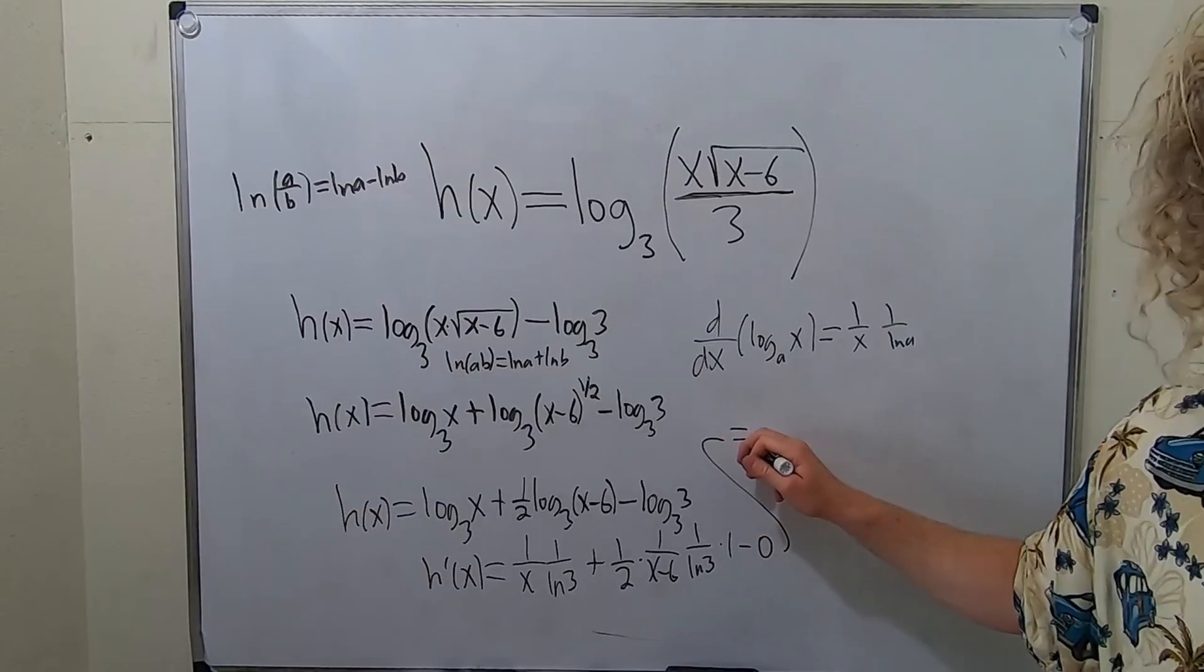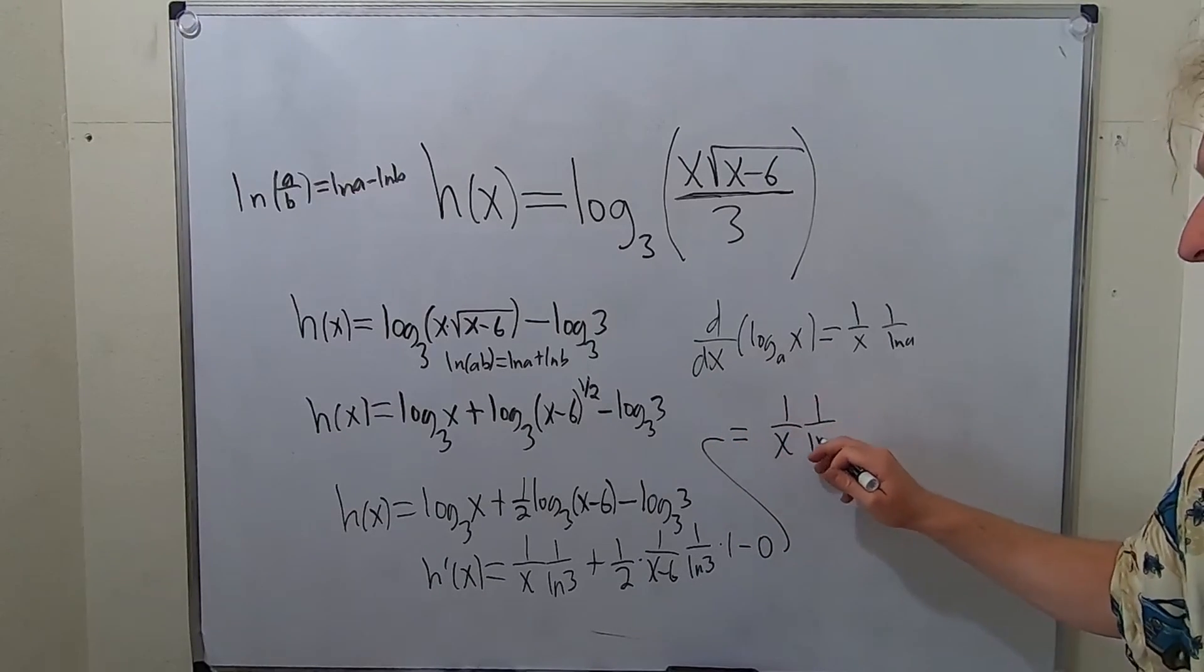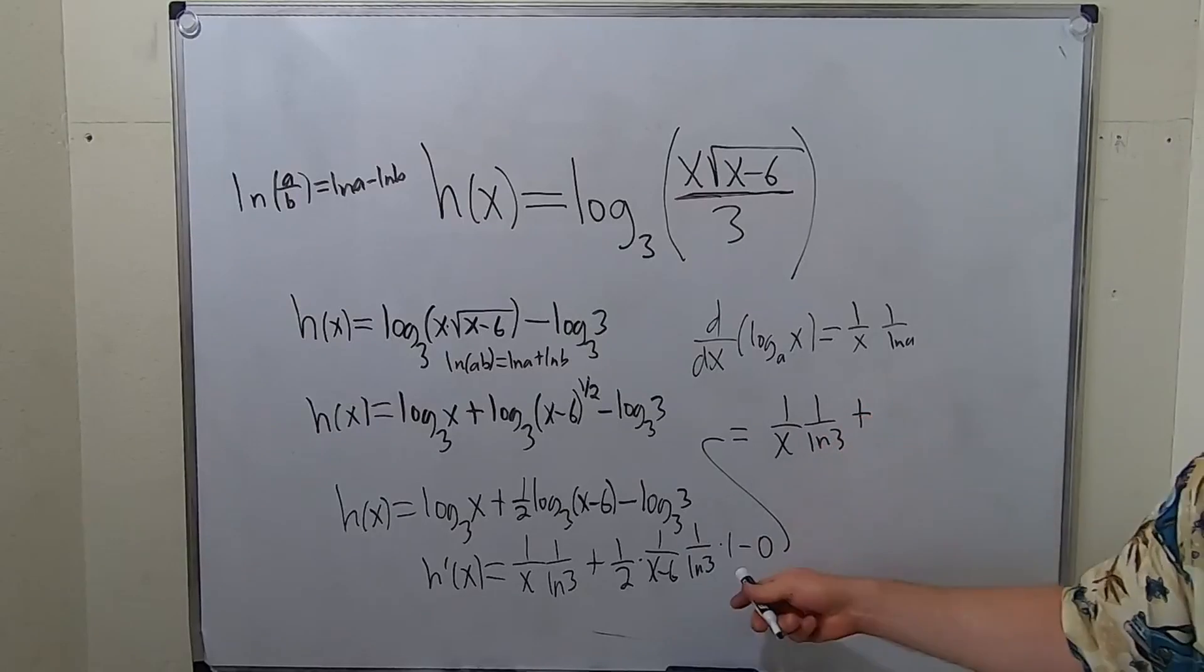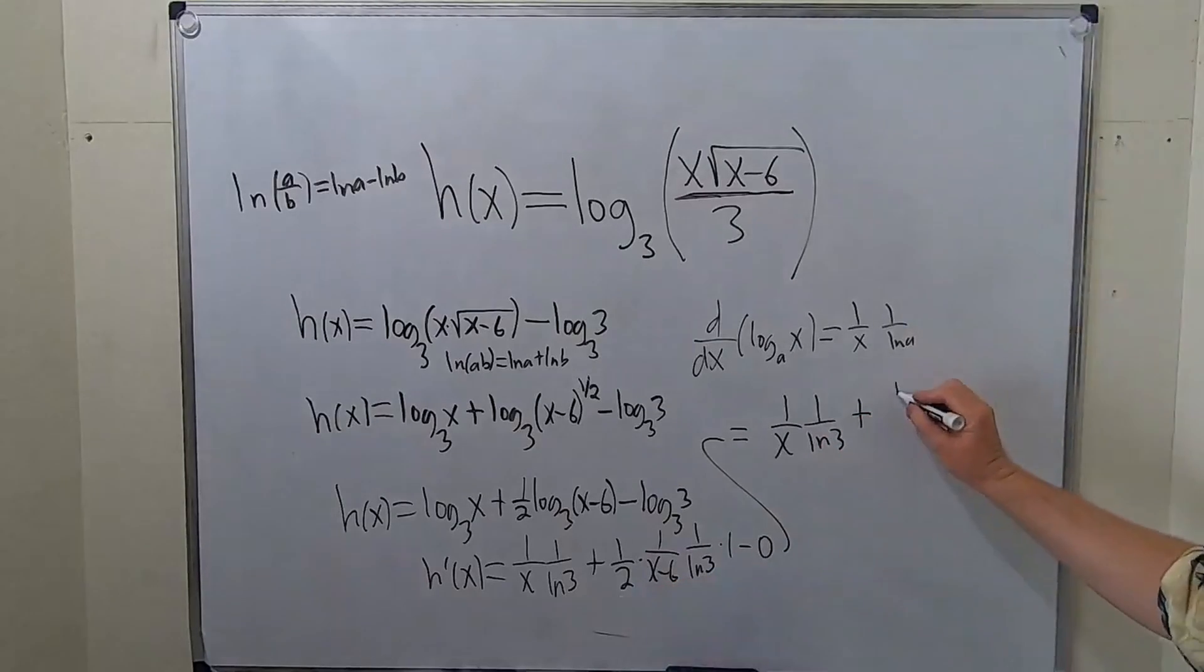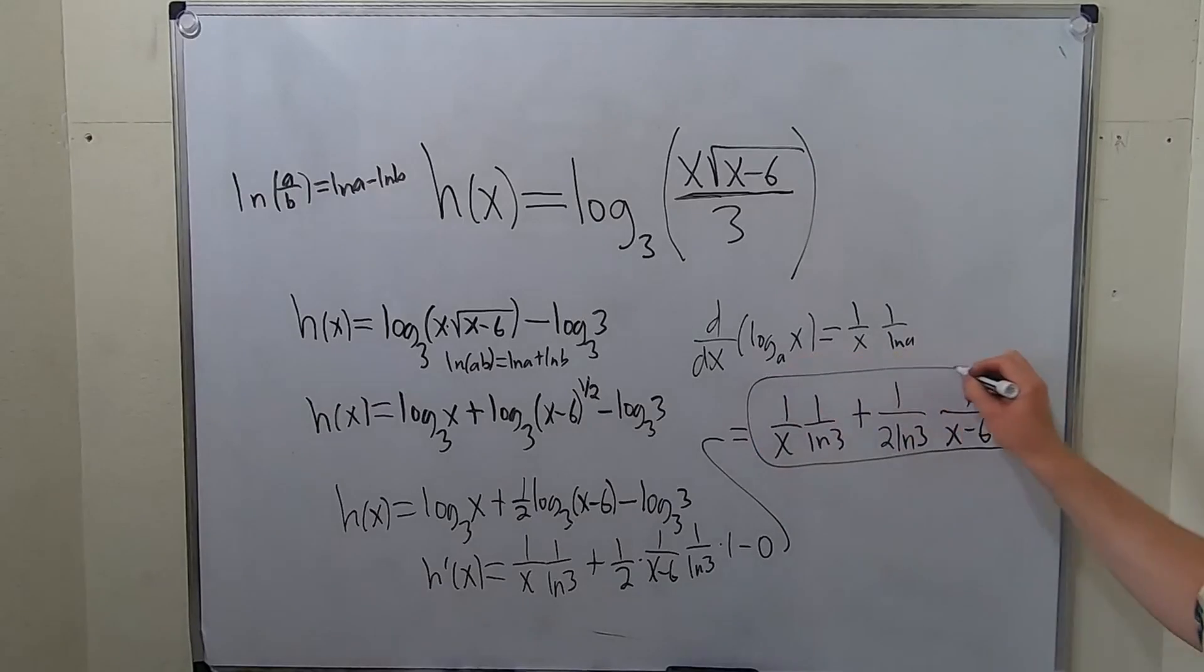So the final answer would be 1 over x, 1 over ln 3, plus, I'm going to pull these constants out front, I'm going to write it like this, 1 over 2 ln 3 times 1 over x minus 6. And that would be an acceptable form of the answer.